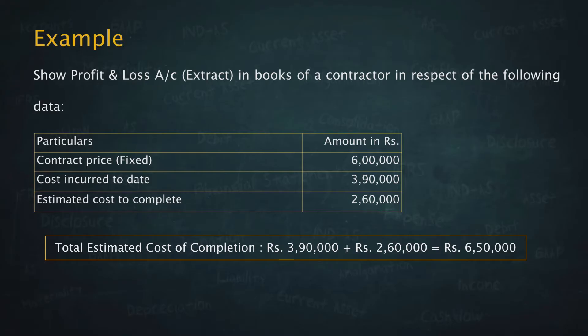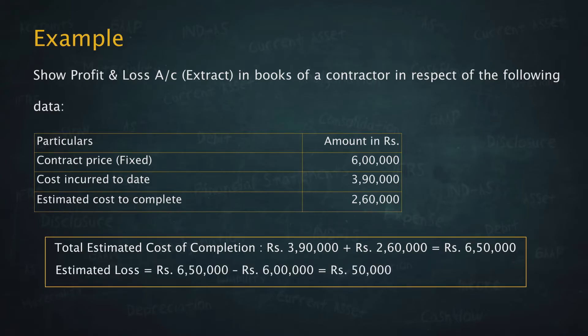6,50,000 is going to be the contract cost, but the fixed contract price is 6 lakhs. So, we anticipate a loss at the end of the contract. 50,000 is the loss we will have once we complete the contract.